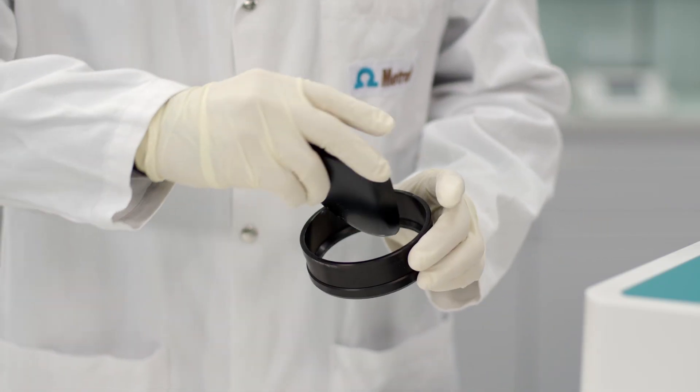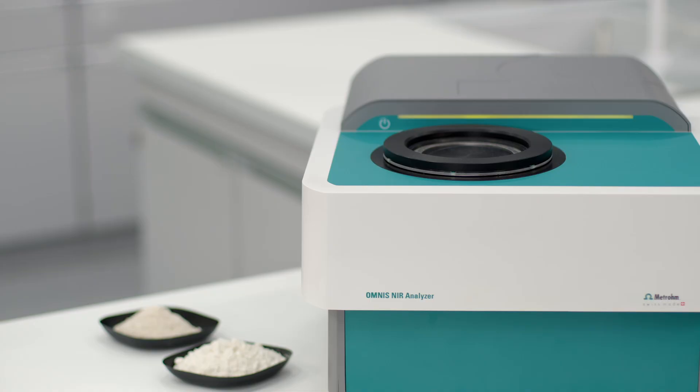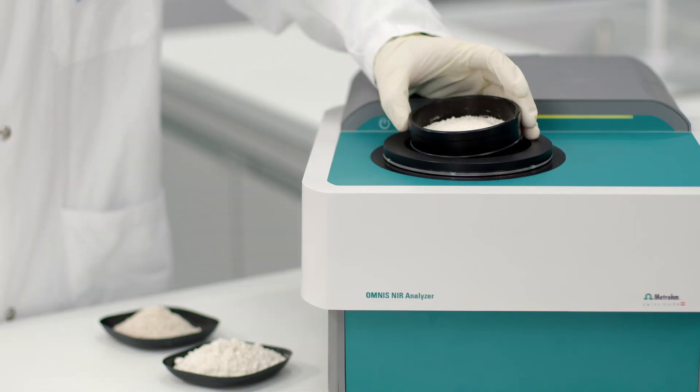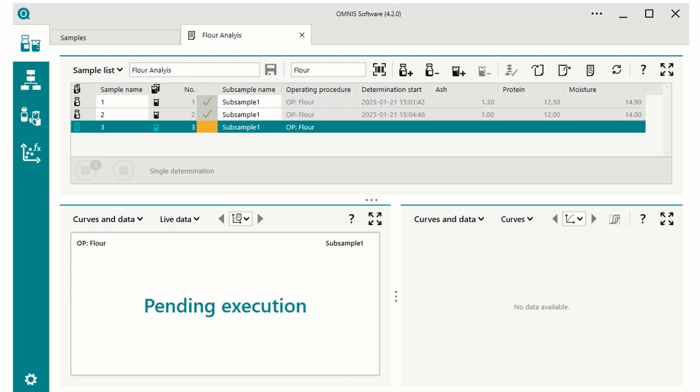This is how it's done. Simply fill the cup with flour, place it on the Omnis near analyzer solid and press the start button in the Omnis software.